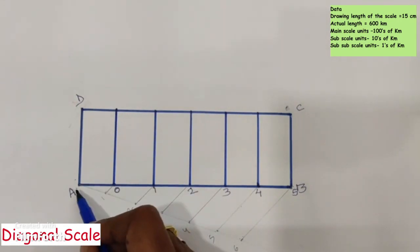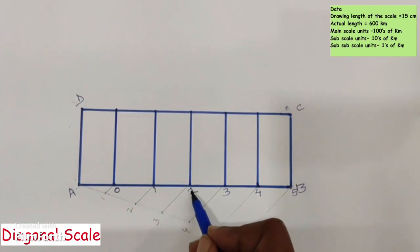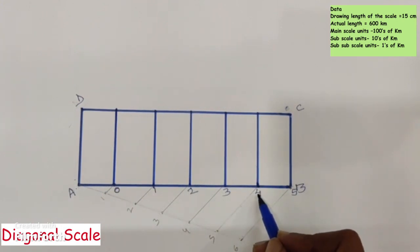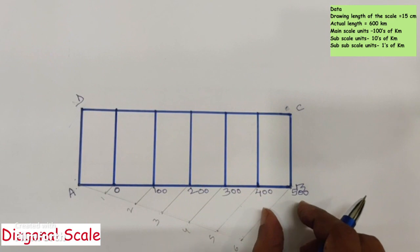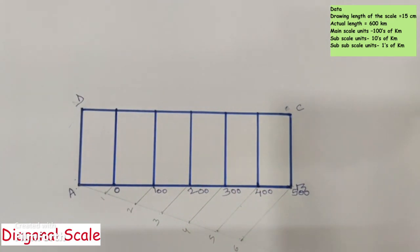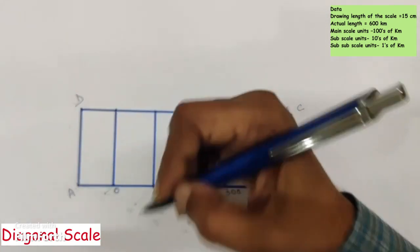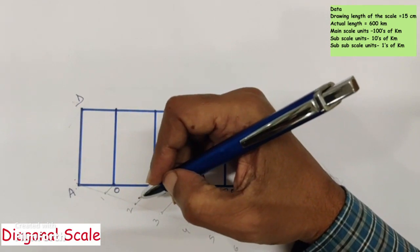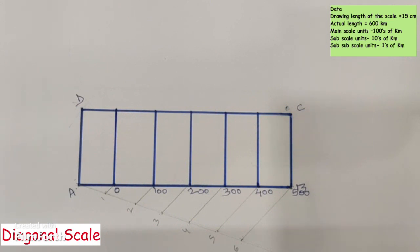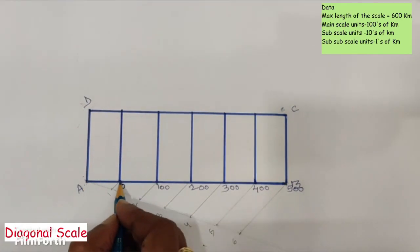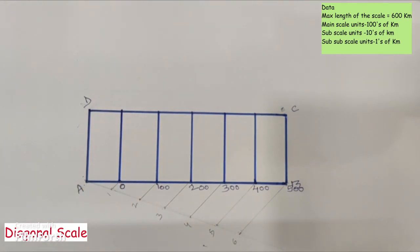The distances A to 0, 0 to 1, 1 to 2, 2 to 3, 3 to 4, and 4 to 5 each indicate 100 kilometers — these are the main scale units in terms of hundreds of kilometers. The immediate subscale units are tens of kilometers, so 100 kilometers must be divided into 10 parts, each representing 10 kilometers. For dividing the length A-zero into 10 equal parts, we again use the acute angle line method.